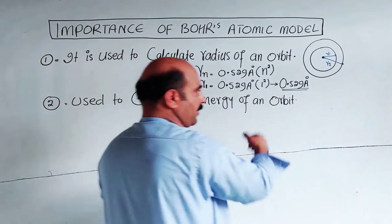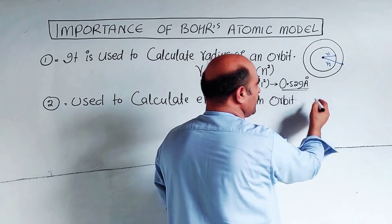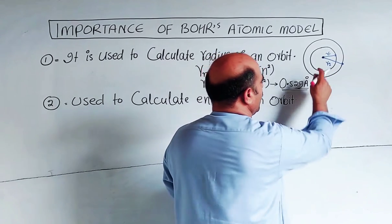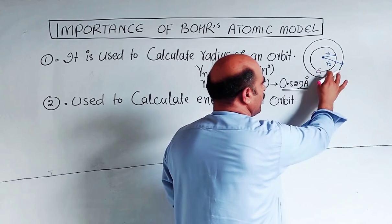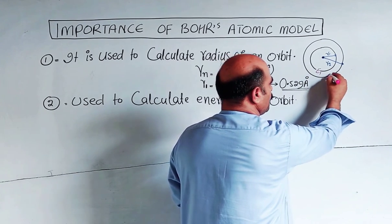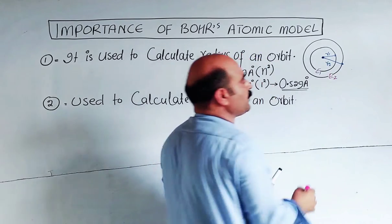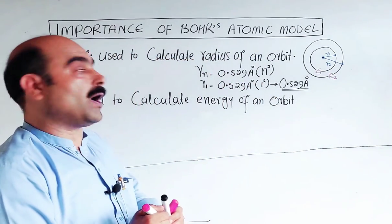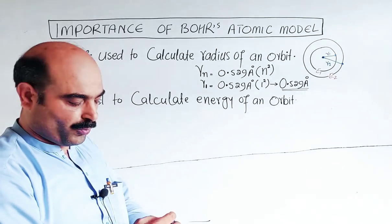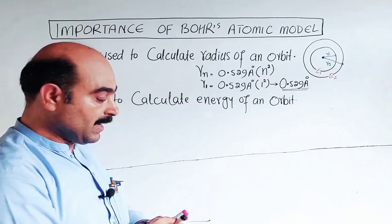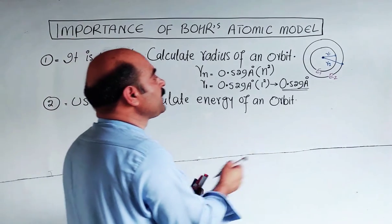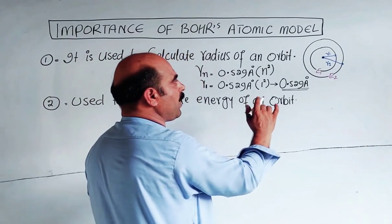What will be the energy of the first orbit, the second orbit, the third orbit, the fourth orbit, and so on? Orbits are represented by whole numbers 1, 2, 3, 4, 5, 6, 7. Positive whole numbers. For this, we use a formula.